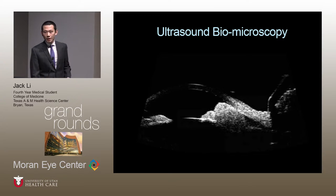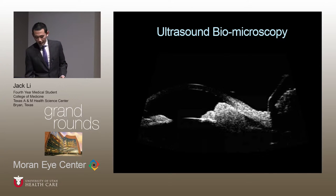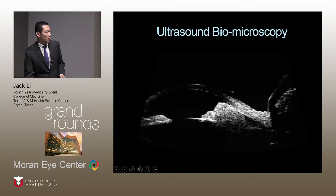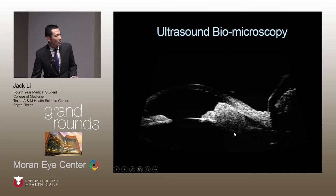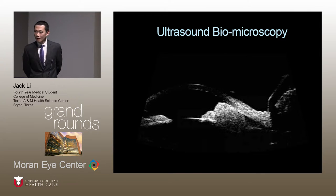Ultrasound biomicroscopy was also performed on our patient to further elucidate the internal structure of this lesion. On ultrasound, we see the cornea, and the contralateral iris demonstrates a more normal architecture. The lesion appears to be a solid lesion which involves the entire stroma of the iris, and the posterior border of the lesion actually extends behind the iris. Dr. Harry noted he could not see the ciliary body in this view, and this was the only image available.